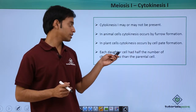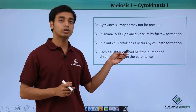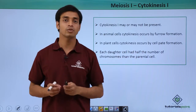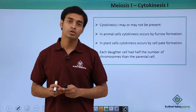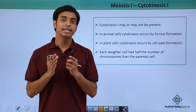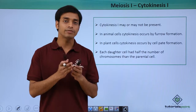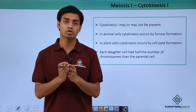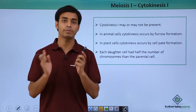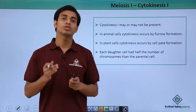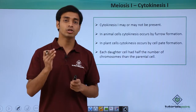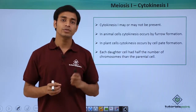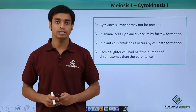In each daughter cell, they have half the number of chromosomes compared to the parental cell. This is because, as we discussed in anaphase 1, the homologous pairs or homologous chromosomes got separated. So the chromosome number, which was 2n, is now reduced to n in these daughter cells.